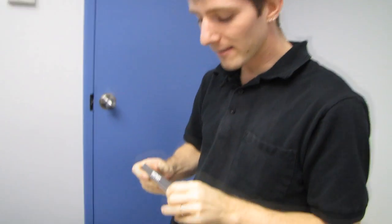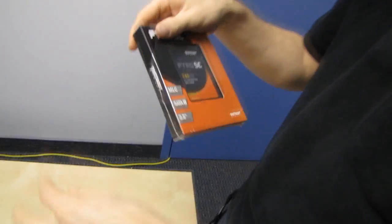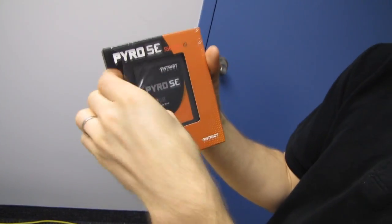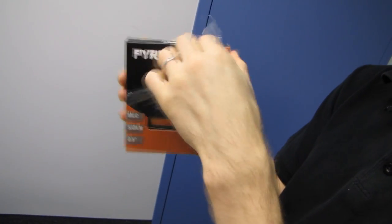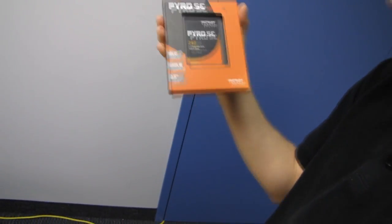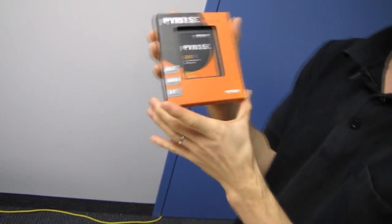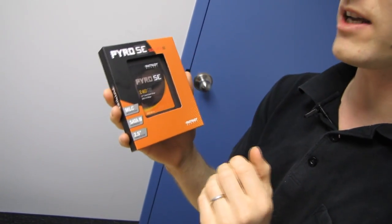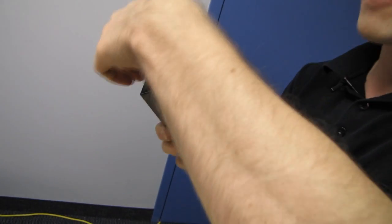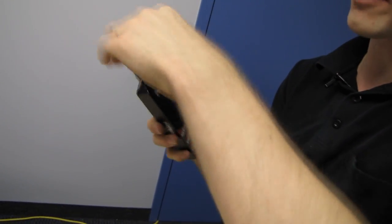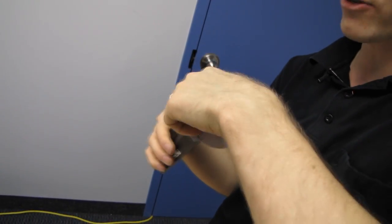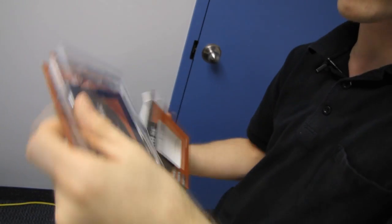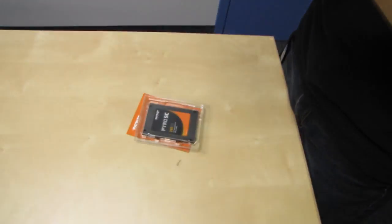The difference between the Pyro and the Pyro SE is that instead of using Async Flash - which would make the regular Pyro equivalent to an Agility 3, pretty much as low-end as it gets for SandForce 2281 SATA 3 6 gigabit per second drives - the Pyro SE uses Synchronized Flash, which gives you better IOPS performance as well as faster sustained reads and writes.